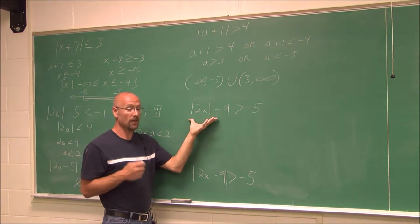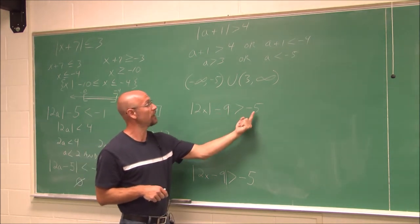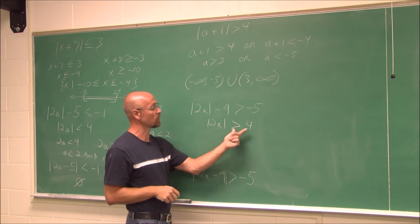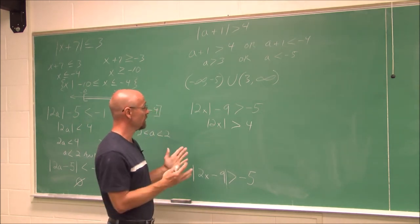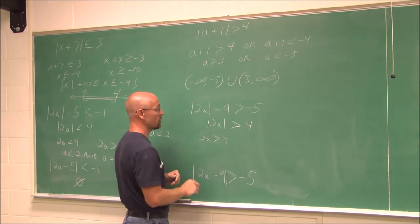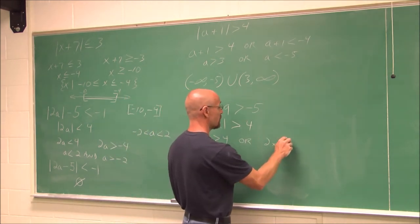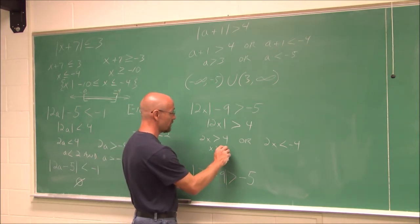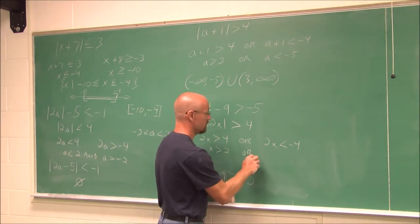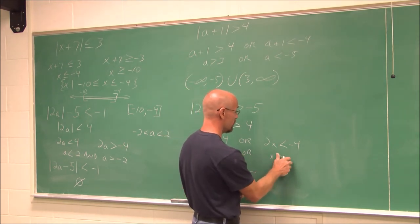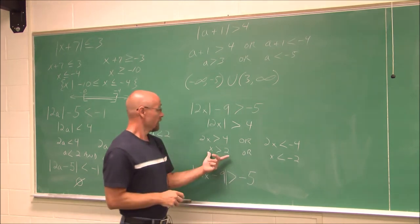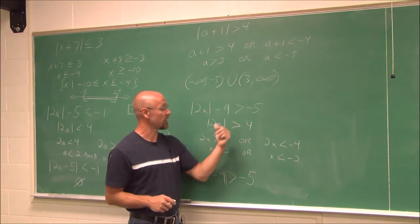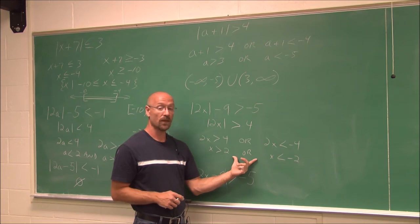Here, absolute values have to be isolated, so I'm going to add 9 to both sides before I begin. By doing that, I get the absolute value of 2x is greater than 4. Now I can write my two equations looking for a union: 2x could be greater than 4, or 2x could be less than negative 4, changing the signs. Solving, I get x is greater than 2, or x is less than negative 2. This could not be written as a double inequality — we have two separate intervals that do not intersect.